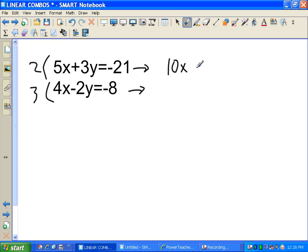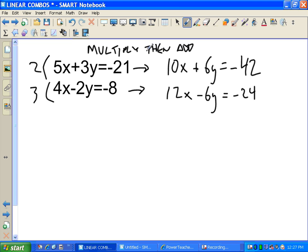This is going to be 10x plus 6y equals negative 42. The bottom, 12x minus 6y equals negative 24. By the way, sometimes this method is called the multiply, then add method. What we do is first we multiply, then we add. When we add here, 22x, because we were clever, we picked the right numbers. Those disappeared. Left me with negative 66 on this side. Divide by 22 gives me x equals negative 3.